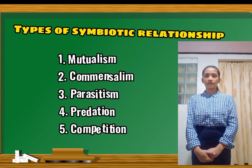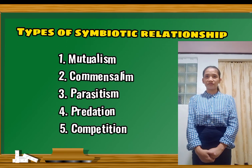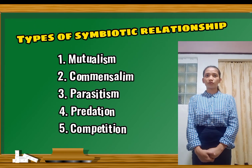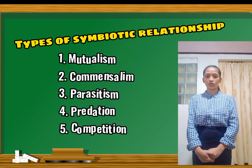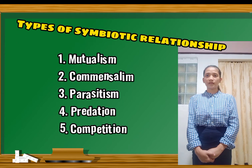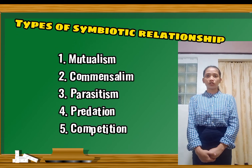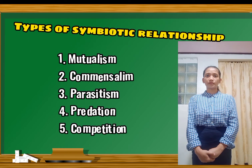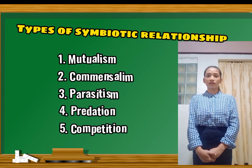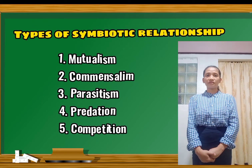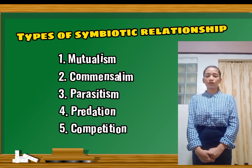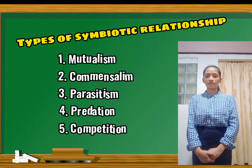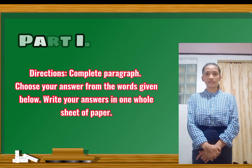Third, parasitism — in which one species, the parasite, benefits while the other species, the host, is harmed. Some parasites live on the surface of their host; others live inside their host. Fourth, predation — the consumption of one living organism, plant, or animal by another. It is also known as the predator-prey relationship. Fifth, competition — when an organism competes with both members of the same species and with other species for resources, food, hiding places to avoid predators, and to protect their young, territory, or nest.